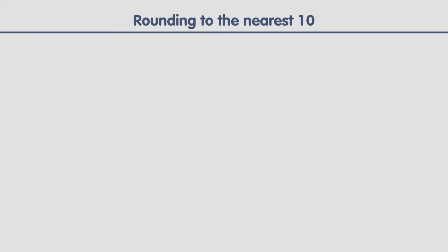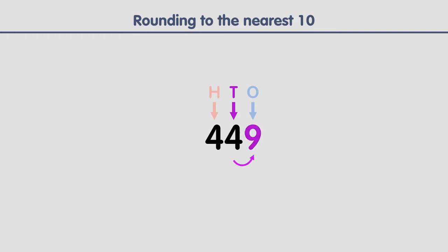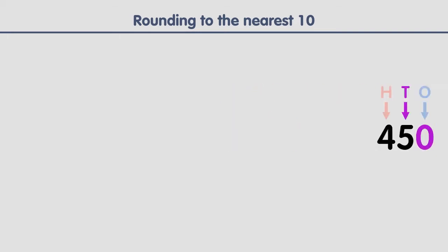Let's look at another example. First, identify the digit in the tens place — it's a four. Then take a look at the digit to the right — it's a nine. Nine is greater than four, so we increase the four in the tens place by one, turning it into a five. Finally, replace the digits to its right with zeros. This is the result. Let's look at more examples.